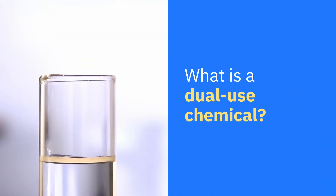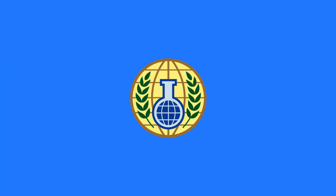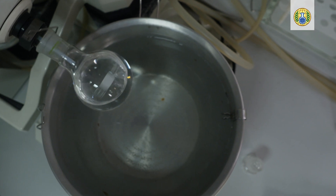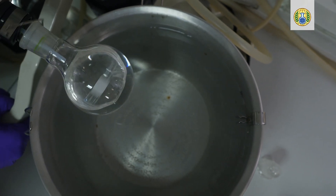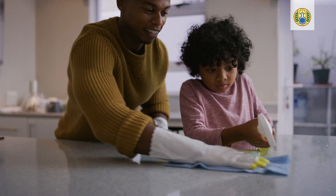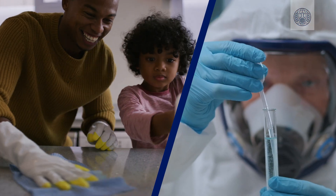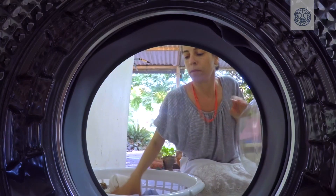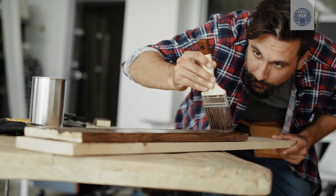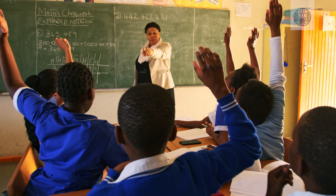What is a dual-use chemical? Put simply, a dual-use chemical is a chemical that can be used for both legitimate, peaceful purposes and harmful purposes. The world is full of them. We use them for everyday purposes in our homes, hospitals, cars and schools.